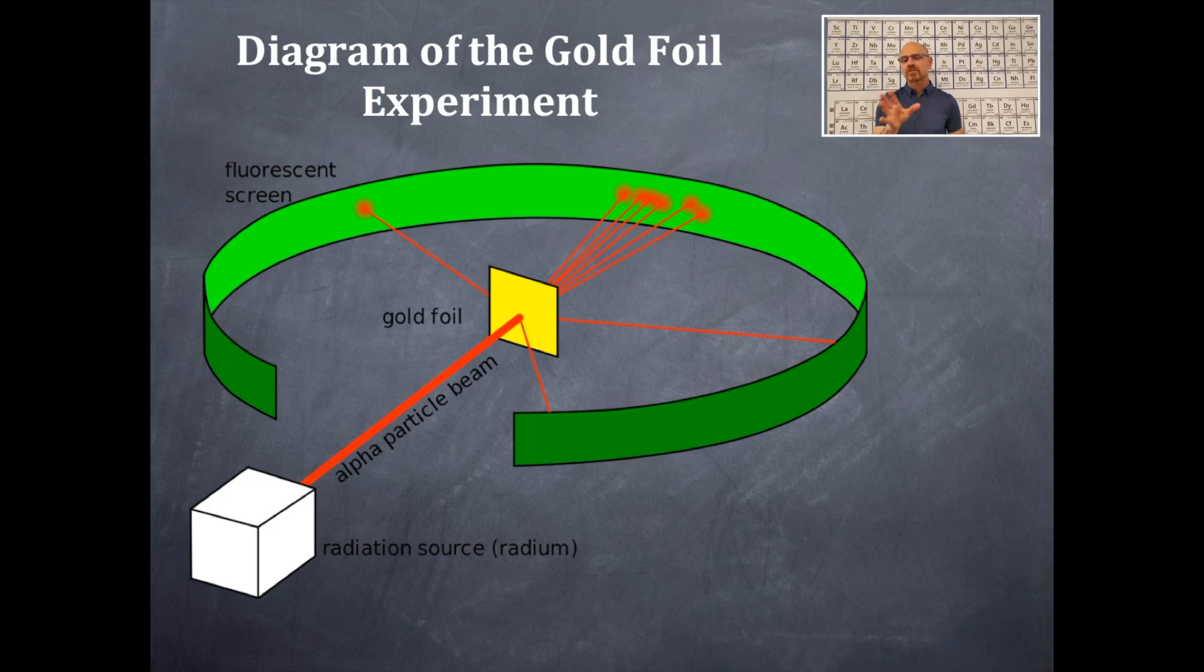You should see just from this diagram that the vast majority of those particles went straight on through to the other side. They went straight through the gold foil and did not hit anything or were not deflected by anything. That indicated to Ernest Rutherford that the atom was mostly empty space.